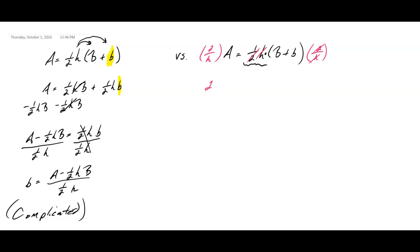So now I get 2A over h equals big B plus little b. And now all I have to do is subtract a big B.